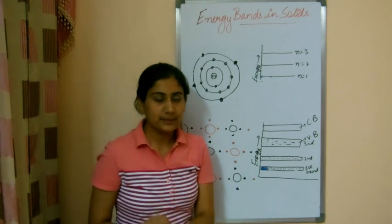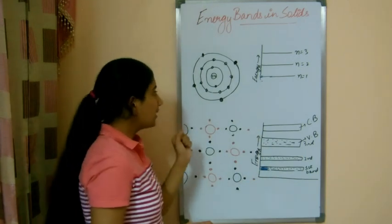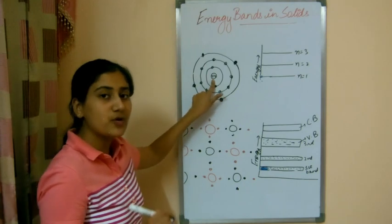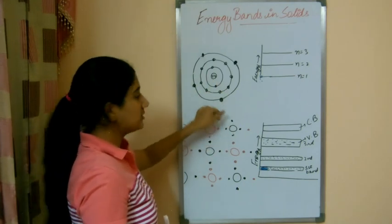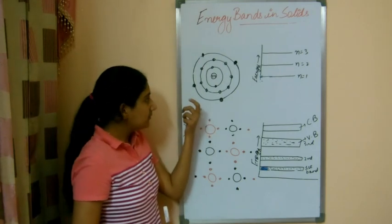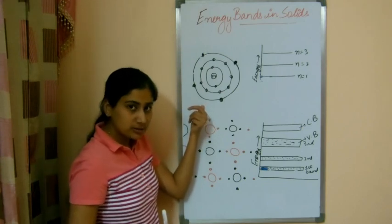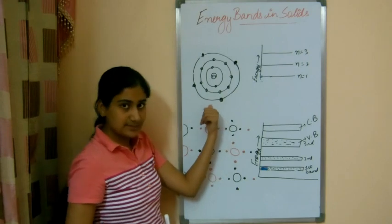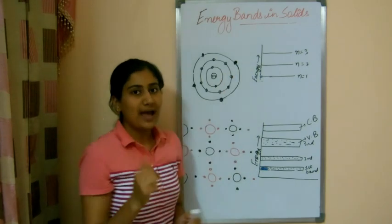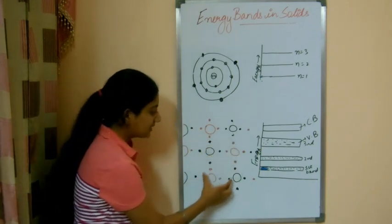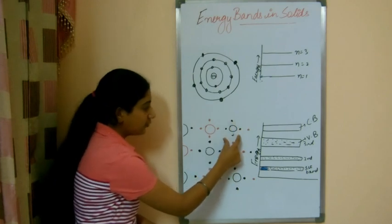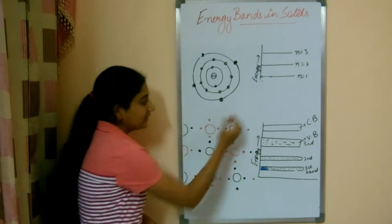We can take silicon as an example. Silicon has atomic number 14, so it has 4 electrons in the valence orbit. The nucleus has a +14 charge with 14 protons, and the electron configuration is 2, 8, 4. Now this valence orbit has 4 electrons, but to be fully filled it should have 8 electrons. In solid silicon, one silicon atom has 4 valence electrons, surrounded by other silicon atoms also having 4 valence electrons. As these atoms come closer, they form bands.